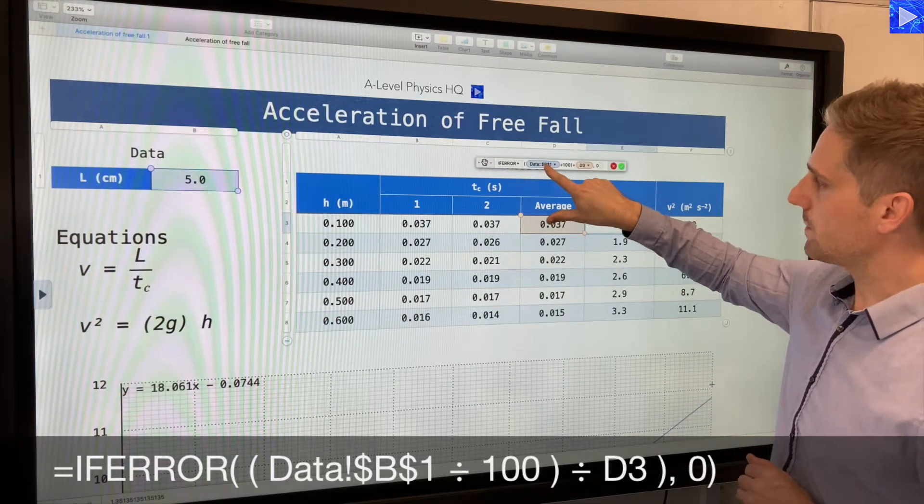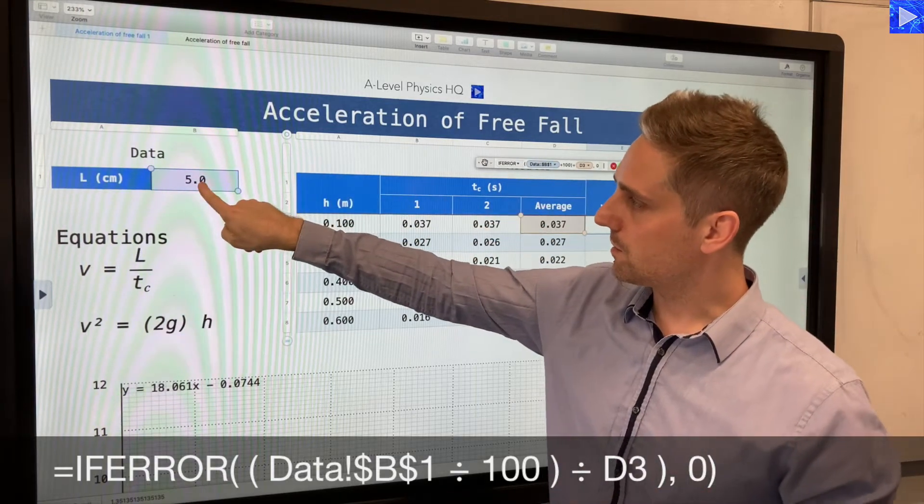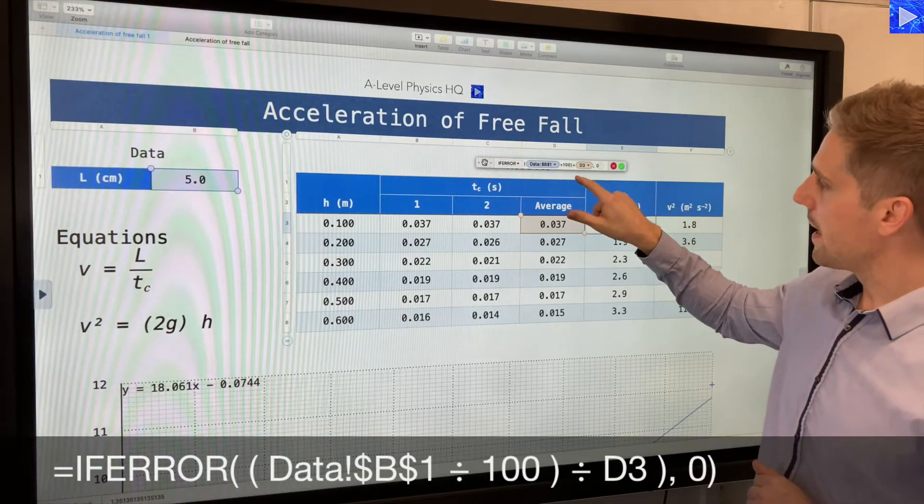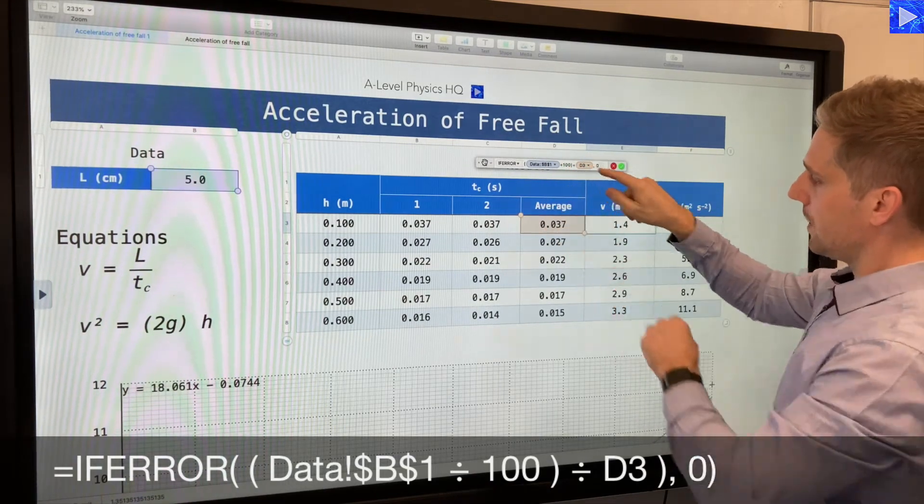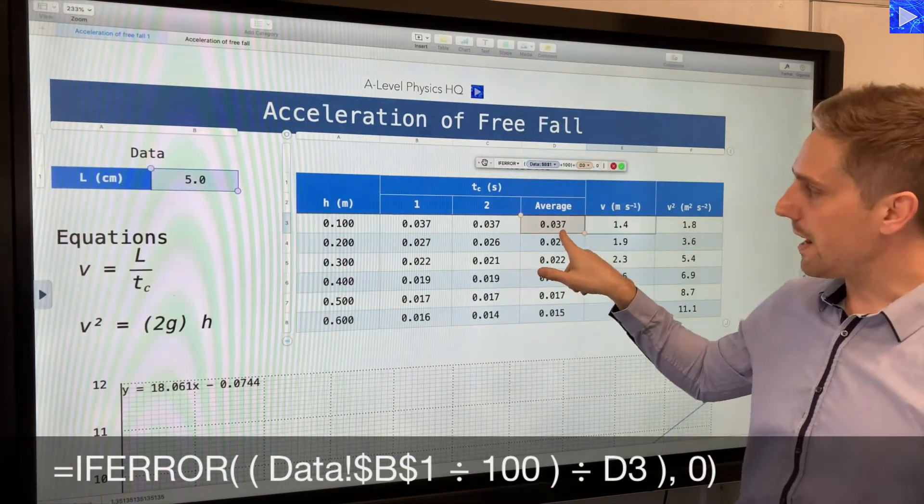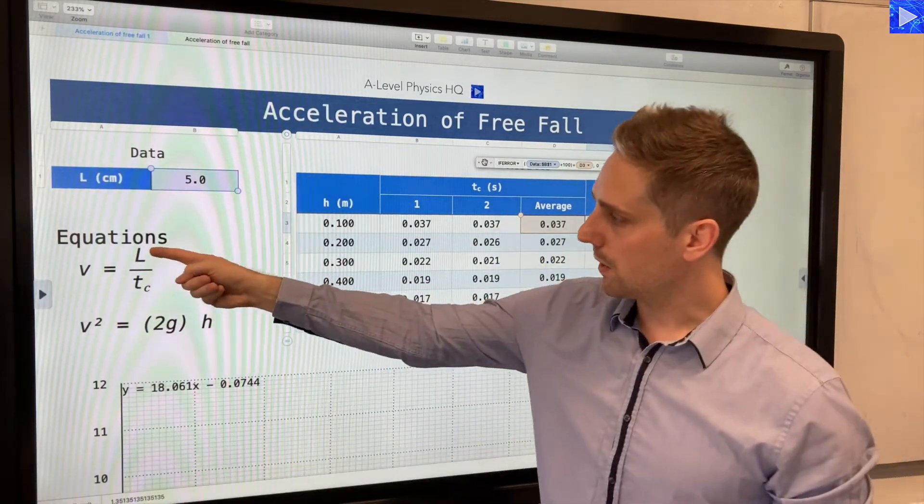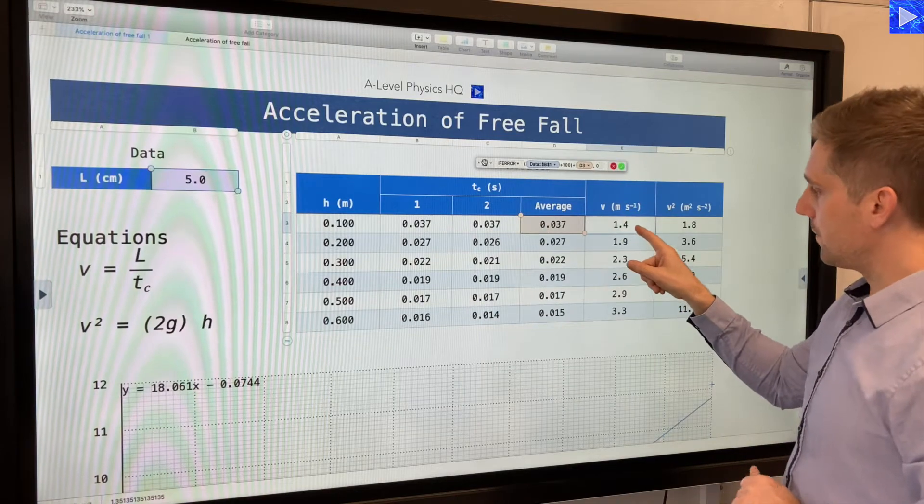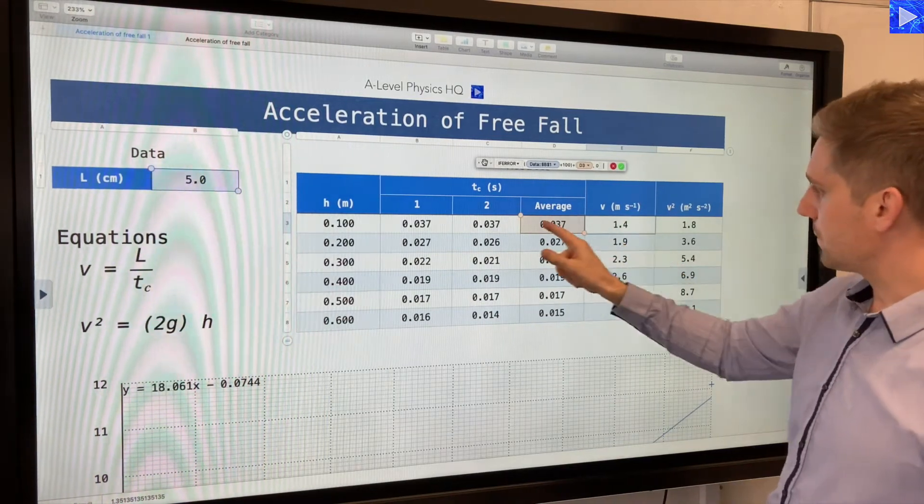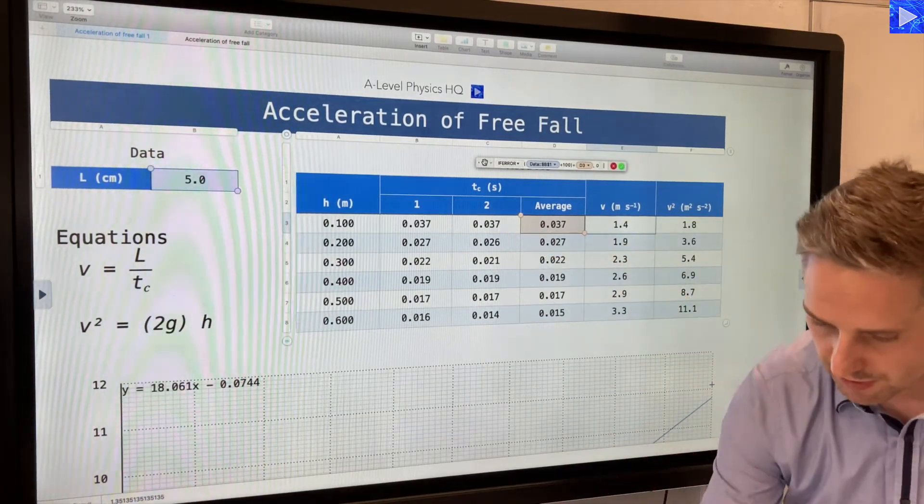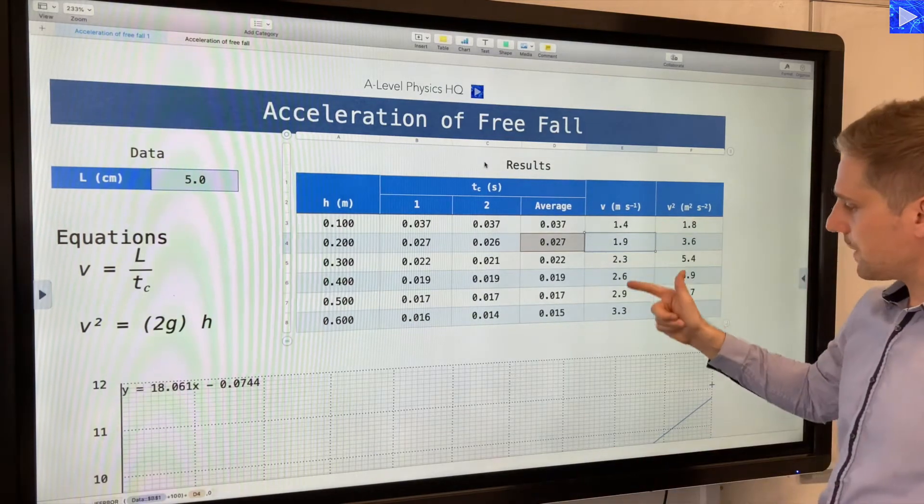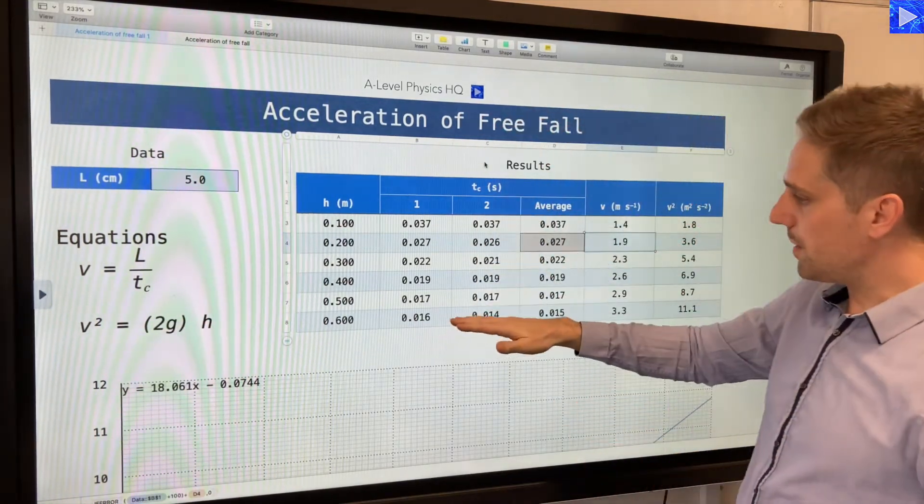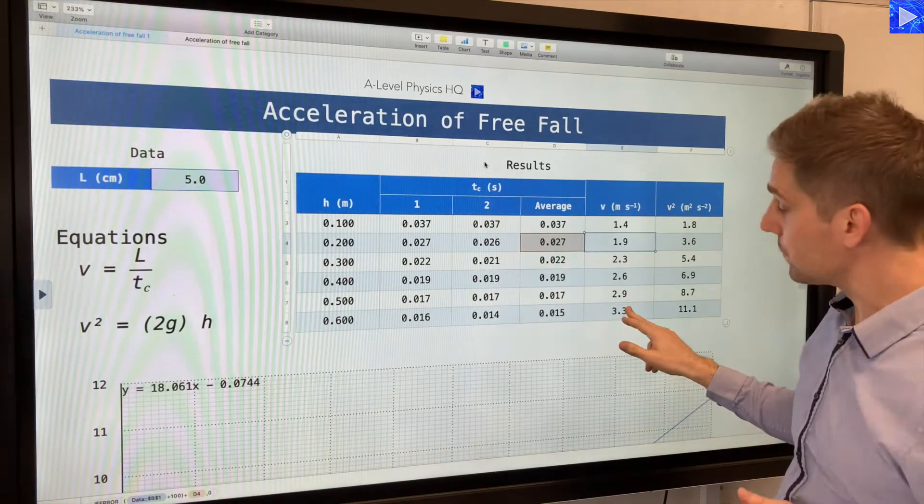What I'm doing is I'm taking the value from this data table here, the length of the card, dividing it by 100, and then in brackets I divide that by the average Tc value. So we're doing L divided by Tc over there. That calculates the first one is 1.4, 1.9 and so on. You can see it's getting faster. As we drop the card from increasing height above the light gate, it's getting faster, just as we would expect.